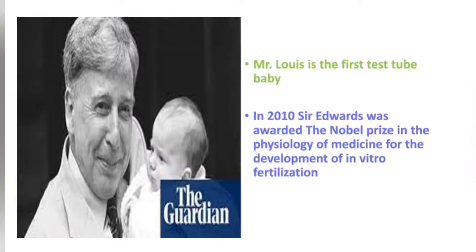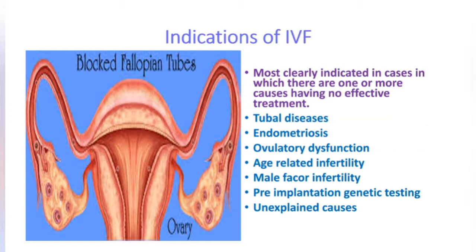Louise Brown is the first test tube baby. Sir Edwards was awarded the Nobel Prize in Physiology or Medicine for the development of in vitro fertilization. The indications of IVF include cases where there are one or more causes having no effective treatment: tubal diseases, endometriosis, ovulatory dysfunction, age-related infertility, male factor infertility, pre-implantation genetic testing, and unexplained causes.